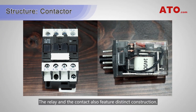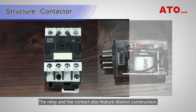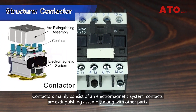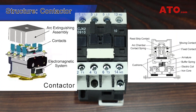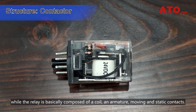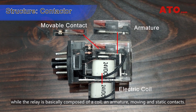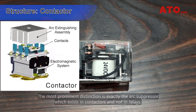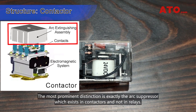The relay and the contactor also feature distinct construction. Contactors mainly consist of an electromagnetic system, contacts, and an arc extinguishing assembly along with other parts, while the relay is basically composed of a coil and armature, and moving and static contacts. The most prominent distinction is the arc suppressor, which exists in contactors but not in relays.